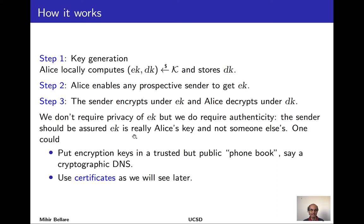We move to this setting because of simplifications and benefits from the point of view of key distribution. One is that we no longer require any privacy of the encryption key — but that doesn't mean we have no requirements on it. We do require authenticity: the sender when it obtains an encryption key should get some assurance that it's really Alice's key. This might be done through a trusted public directory, a phone book, a personal web page, or most commonly through the public key infrastructure and digital certificates.